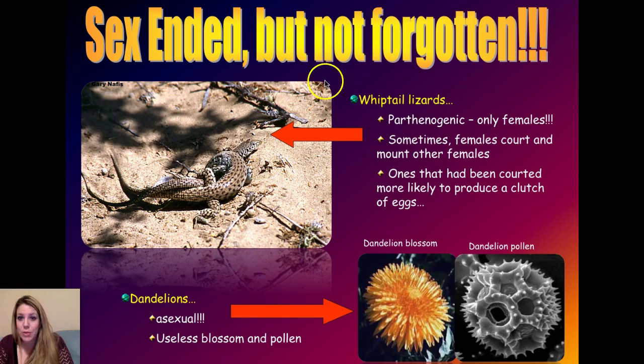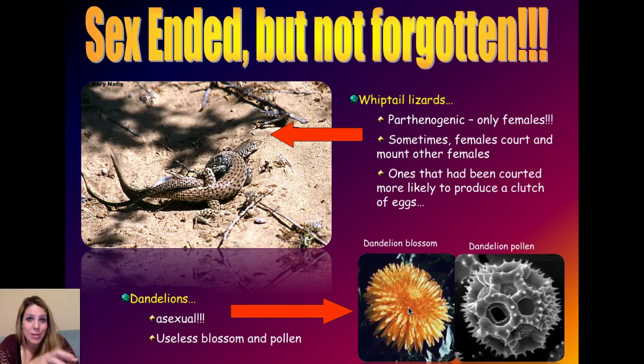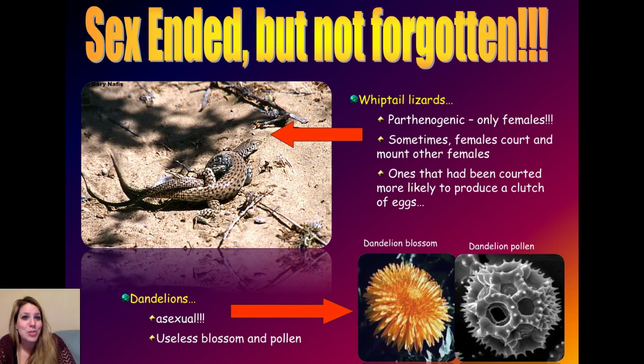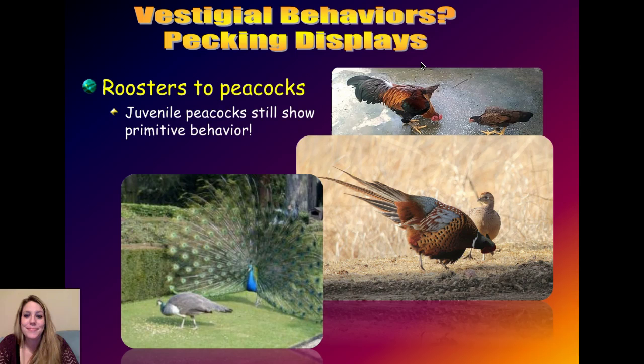You can also have vestigial sexual parts. For example, dandelions are asexual. New dandelions are produced by sending out little clones — bees will try to pollinate them, but the pollen from dandelions is actually sterile. It's vestigial, from an ancestor that had fertile pollen. They've kept the pollen, but it doesn't actually produce any baby dandelions now. So it's a vestigial structure — sex ended, but not forgotten.